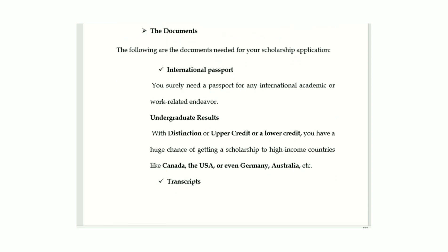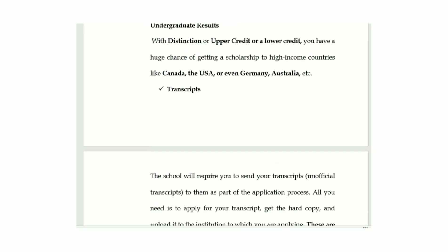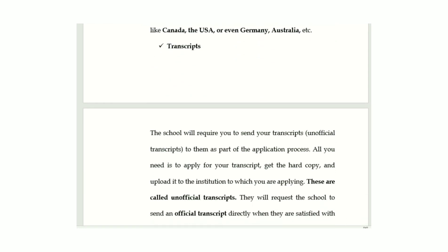The documents required for your application include your international passport, which is required by some schools during the application. Your undergraduate results — whether distinction, first class, upper credit, or lower credit — I can tell you, you can get a fully funded scholarship into the US, Canada, or some schools in Europe from experience. Your transcripts are very important; most schools abroad will require you to send your unofficial transcripts, the ones you get by hand from your school.